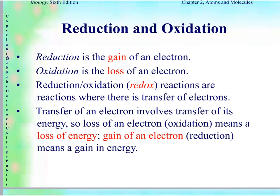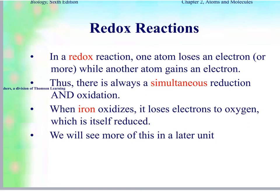The main paired reactions in AP Biology are reduction and oxidation. Reduction is the gain of an electron; oxidation is the loss of an electron. A mnemonic is OIL RIG: Oxidation Is Loss, Reduction Is Gain. They're abbreviated as redox reactions — reactions where an electron is transferred from one atom to another. One atom loses the electron and the other gains it. This transfer involves a transfer of energy — losing an electron means losing energy, and gaining an electron means gaining energy. For example, when iron oxidizes, it loses electrons to oxygen: iron is oxidized and oxygen is reduced. We will see this again in cellular respiration and photosynthesis.